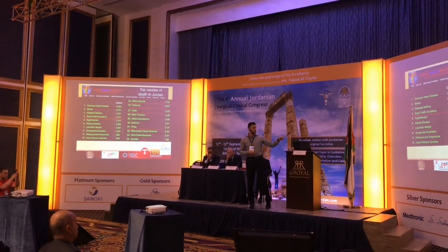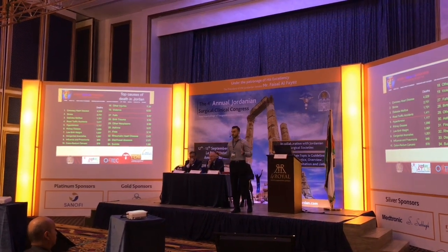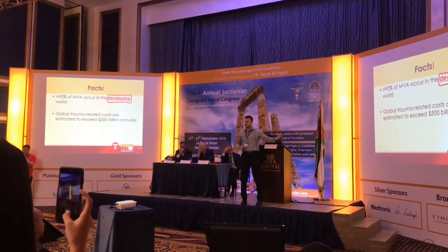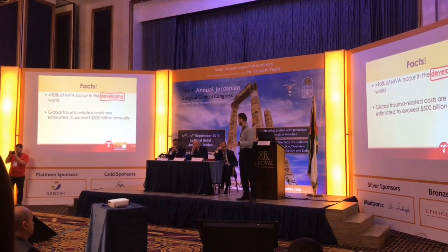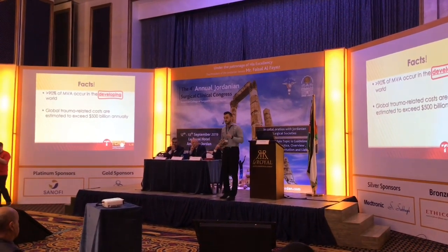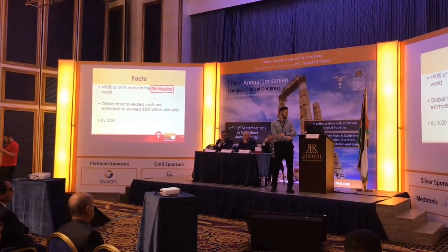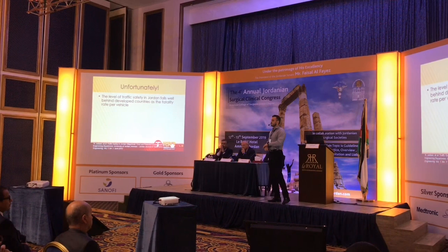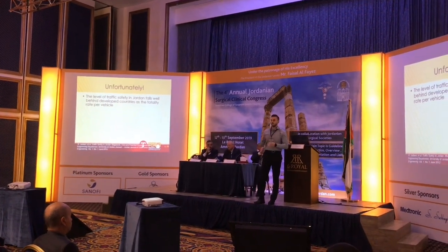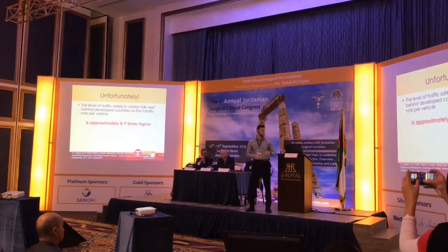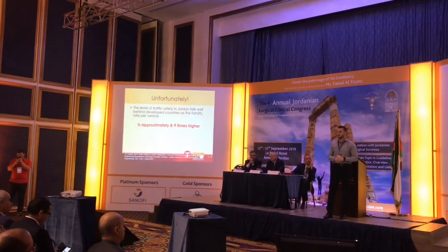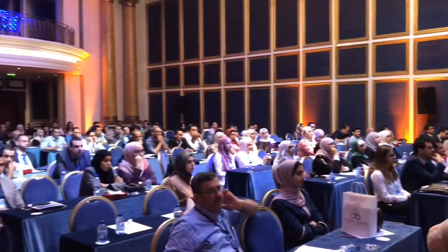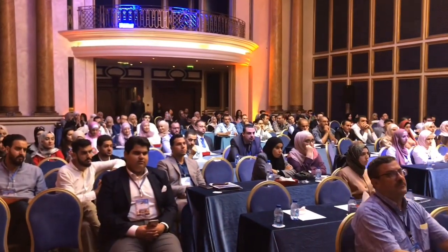Road traffic accidents are the top cause of death in Jordan. If you collect road traffic accidents, violence, falls, and fires together, trauma is number one. It costs about one million a day in Jordan because of road traffic accidents, and by 2020 it will increase by 80%. Unfortunately, the vehicle mortality rate — what vehicles kill per 100,000 population — is about eight to nine times more than the international ratio, and it's a snowball getting bigger each year.